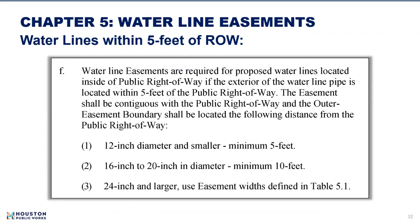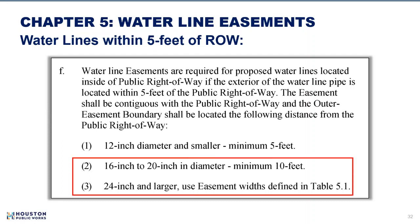Easement requirements for water lines placed within 5 feet of the right-of-way have also been updated. These easements are contiguous with the right-of-way. The water line diameter range has been updated to 16 inches to 20 inches, but the requirement was kept at 10 feet minimum easement width. Sub-article 3 was added and refers to Table 5.1 minimum easement for large diameter water lines for this particular case.